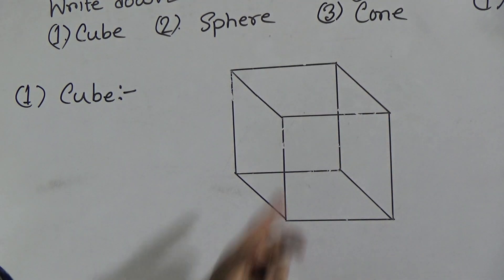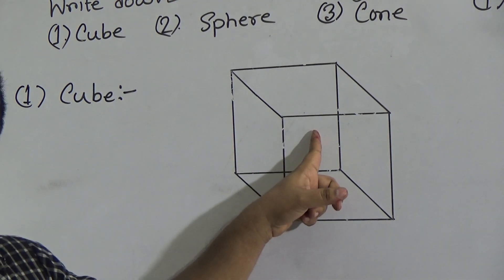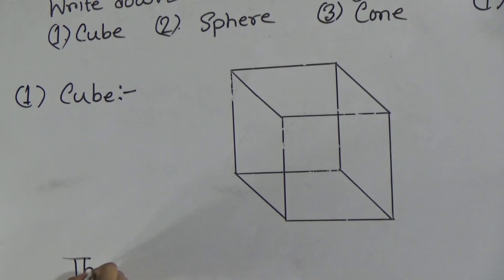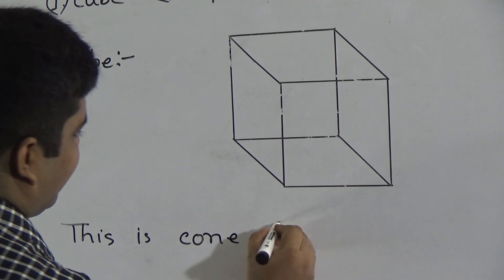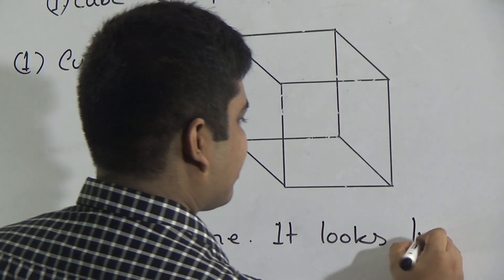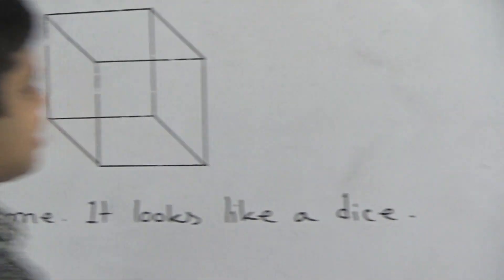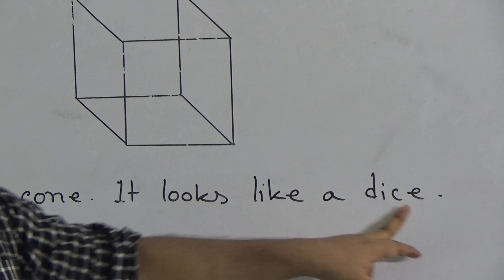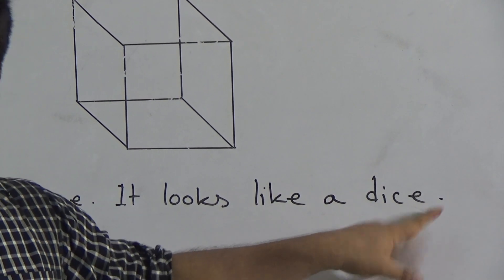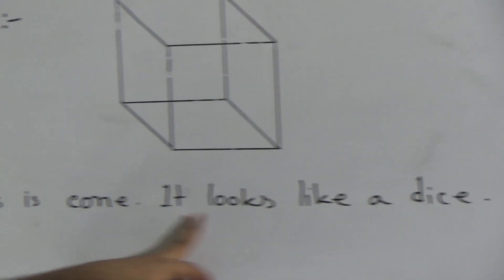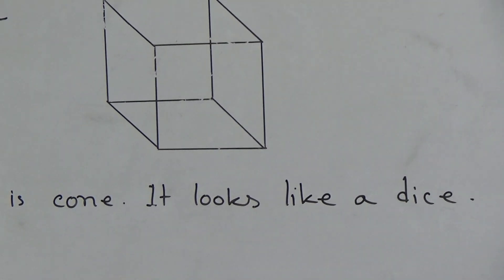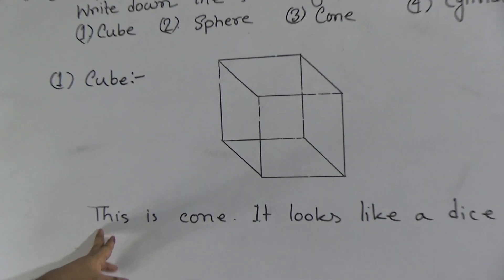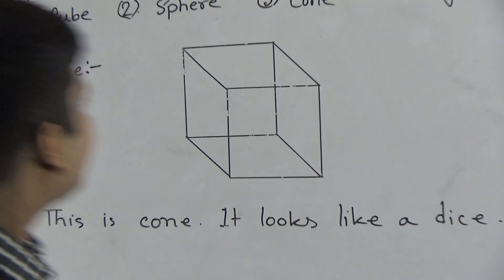We connect this corner to this one, this one to this one, this one to this one, and this one to this one. This is a cube — it looks like a dice. So I write: this is a cube and it looks like a dice. The spelling of dice is D-I-C-E. I hope you have understood how to draw a cube and what to write under it.